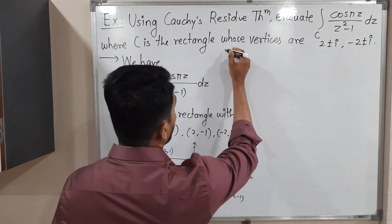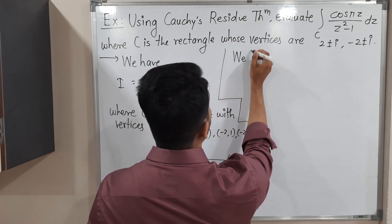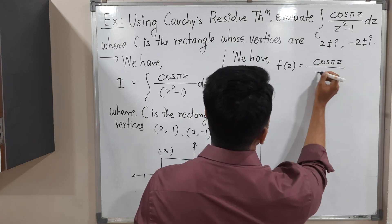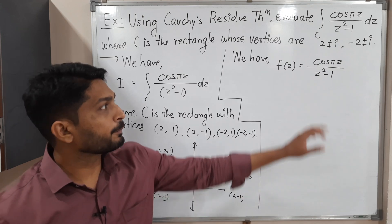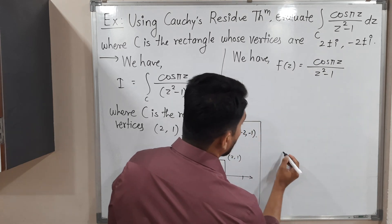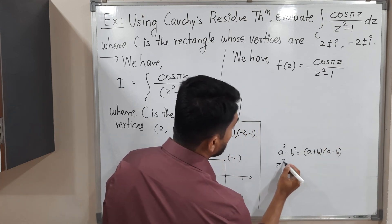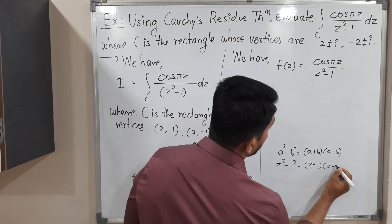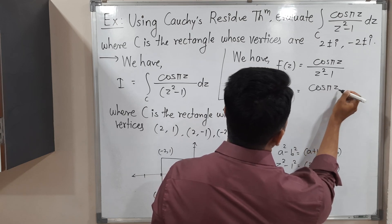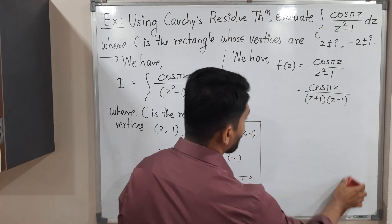Now let us consider the function. We have f(z) = cos(πz) / (z² - 1). In the denominator we have a polynomial of degree 2. Using the difference of squares formula a² - b² = (a+b)(a-b), we can write z² - 1 = (z+1)(z-1). So f(z) = cos(πz) / [(z+1)(z-1)].